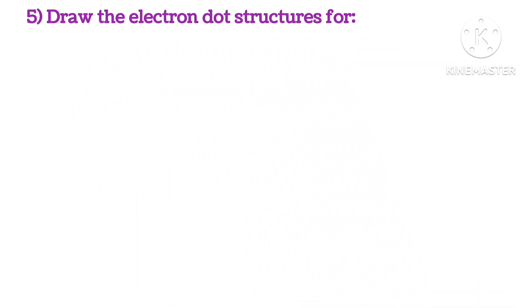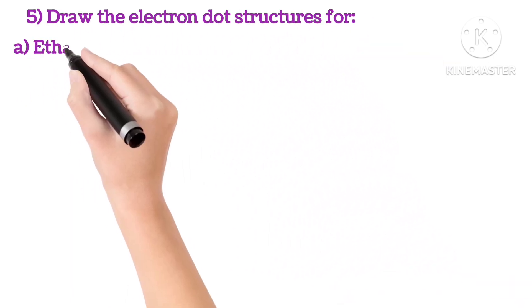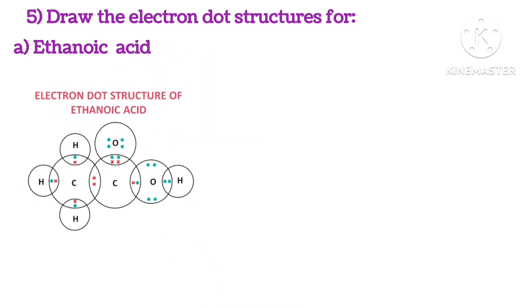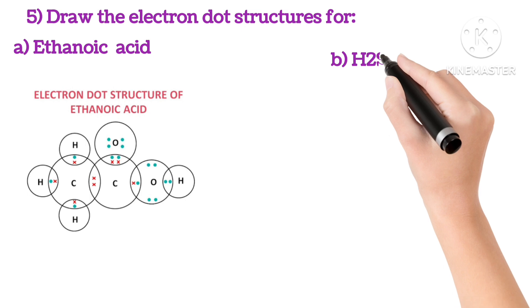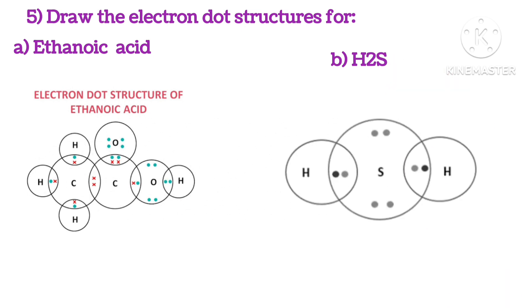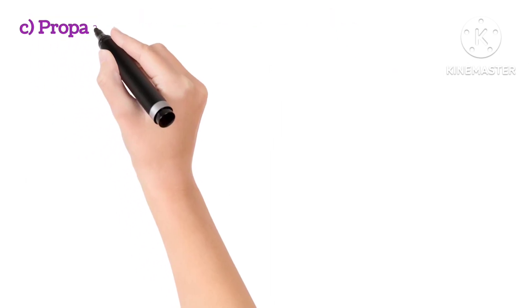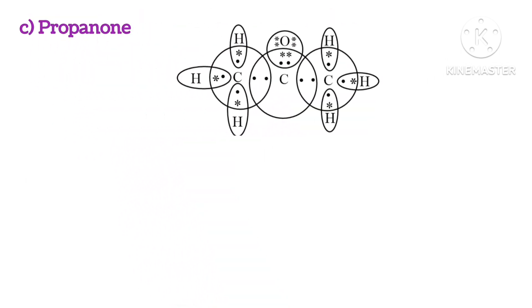Fifth, draw electron dot structures for: A. ethanoic acid, you can see the structure here; B. hydrogen sulfide; C. propanone; and D. fluorine gas.